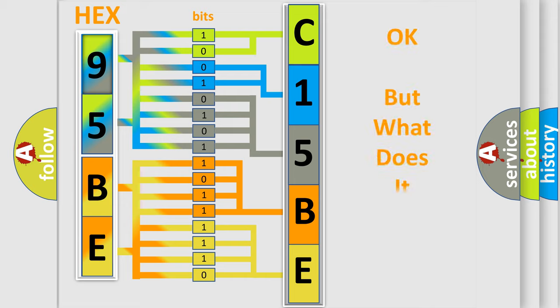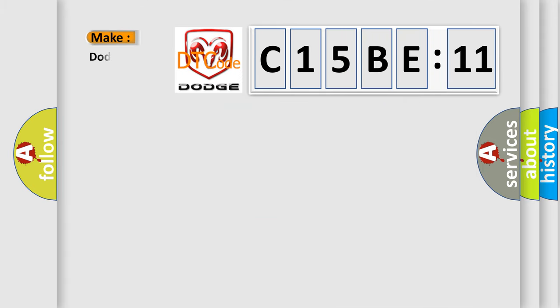The number itself does not make sense to us if we cannot assign information about it to what it actually expresses. So, what does the diagnostic trouble code C15BE11 interpret specifically for Dodge car manufacturers?